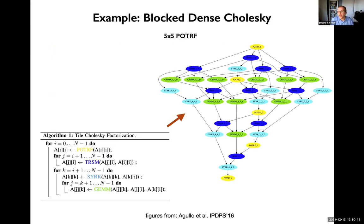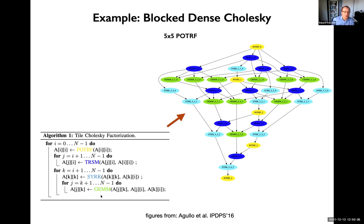As a simple example, I'll introduce Cholesky since I'll talk about it later. Even if you've never seen pseudocode for Cholesky, the bottom line is it's composed of four types of operations with a wavefront-like structure. There's an outer loop, a couple of inner loops, and a third set of loops — it's a cubic algorithm for a dense matrix. In practice, it's implemented in terms of operations on blocks of a matrix rather than on individual elements.